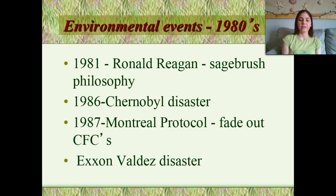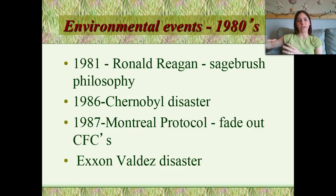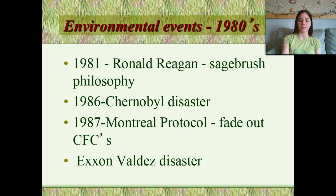In the 1980s, in 1981, President Ronald Reagan adopted a sagebrush philosophy, basically wanting to move land from federal government ownership to being owned and managed by individual states. We had the Chernobyl disaster. We had the Montreal Protocol to phase out chlorofluorocarbons, or CFCs. And the huge Exxon Valdez oil spill killed hundreds of thousands of birds, fish, and all kinds of wildlife.